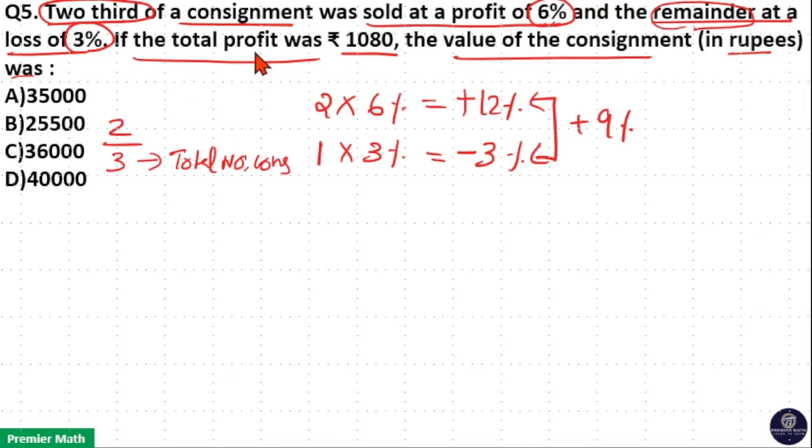Here, total profit is in question given as 1080. So, 9% is equal to 1080.